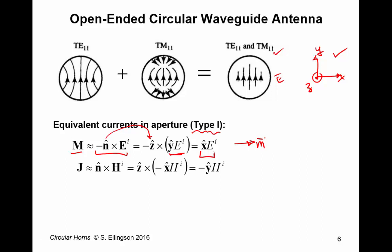Similarly, we can work out the equivalent electric currents. So, the relationship there is surface normal cross the magnetic field intensity. Again, the surface normal is Z-hat in this coordinate system.